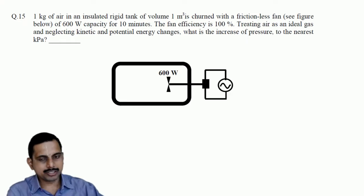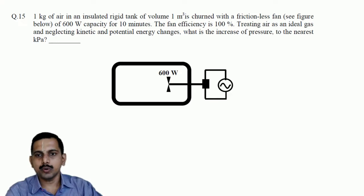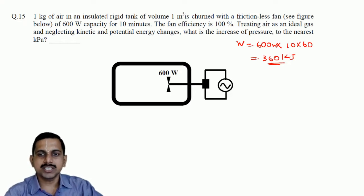Let us do this problem. First, what is the amount of work done? Here it is a rigid insulated cylinder, so work is done on the system, the gas. Work done is 600 watts times 10 minutes times 60 seconds, which gives 360 kJ. Since the work is done on the system, it is negative.